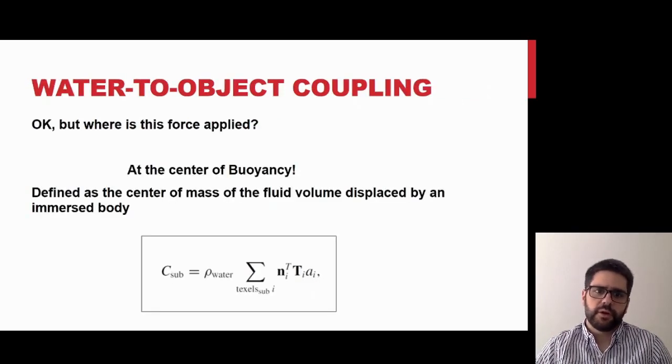Once the submerged volume is computed, then the upward buoyant force can be computed easily using the liquid density. This force is applied at the center of buoyancy, which is the center of mass of the displaced liquid.